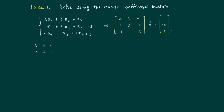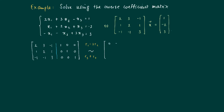We write down the augmented matrix by placing the 3×3 coefficient matrix on the left and the 3×3 identity matrix on the right, separated by a blue line. We then aim for the reduced row echelon form. First, we clean up the first column: we appoint the pivot in the first row and clean up the 2 and minus 1 by subtracting 2 times row 2 from row 1 and adding row 2 to row 3, giving 2 zeros in that column.